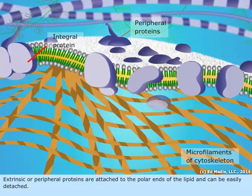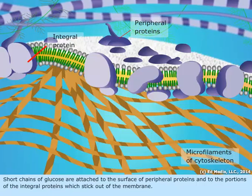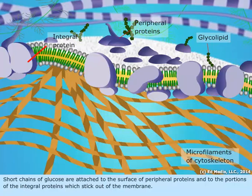They help in the transport of specific substances across the bilipid membrane and in cell to cell communication. They may also undergo enzymatic activity. Short chains of glucose are attached to the surface of peripheral proteins and to the portions of the integral proteins which stick out of the membrane.